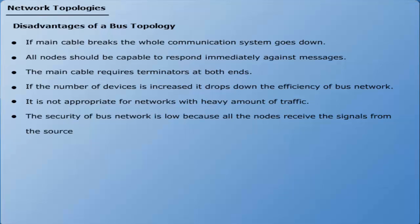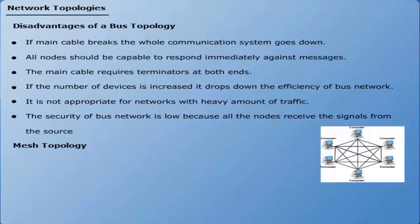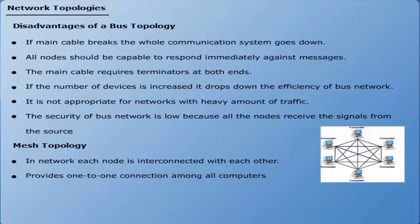Mesh topology. A mesh topology is made up of a network where each node is interconnected with each other. It provides a one-to-one connection amongst all the computers on the network. The arrangement of mesh technology is very expensive as dedicated connections are required between every node of the network and it results in many redundant connections.